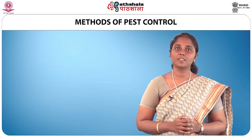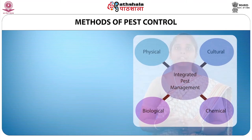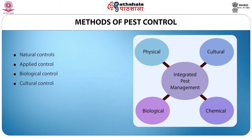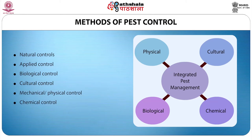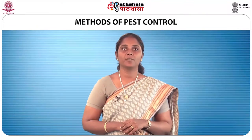Now let us look into the methods of pest control. The various methods include natural controls, applied controls, biological controls, cultural control, mechanical or physical control, chemical control, and ensuring proper sanitation. Let us see each method in detail.